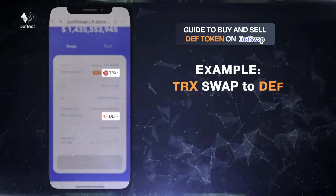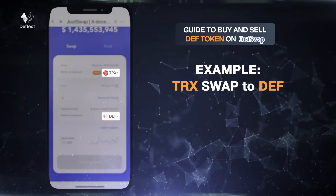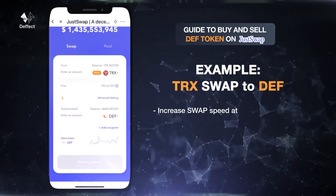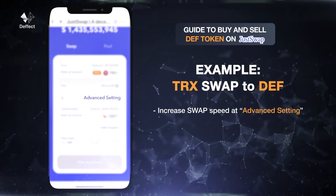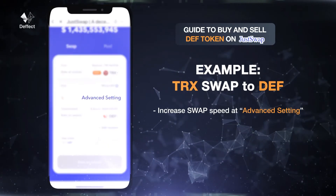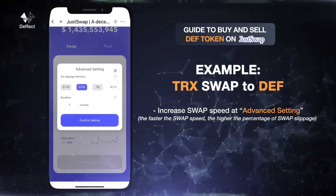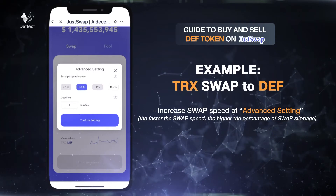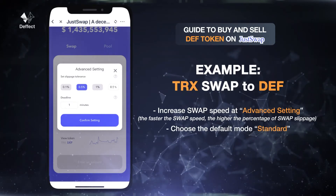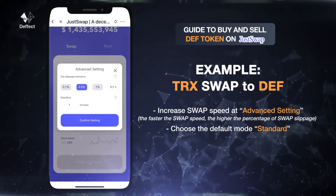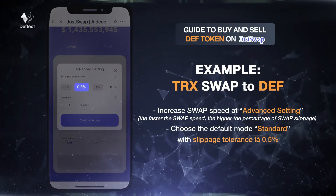For example, I have TRX and I want to swap to DEF. We can choose how to increase swap speed at Advanced Settings. The faster the swap speed, the higher the percentage of swap slippage. Here we will choose the default mode standard, with slippage tolerance of half a percent.